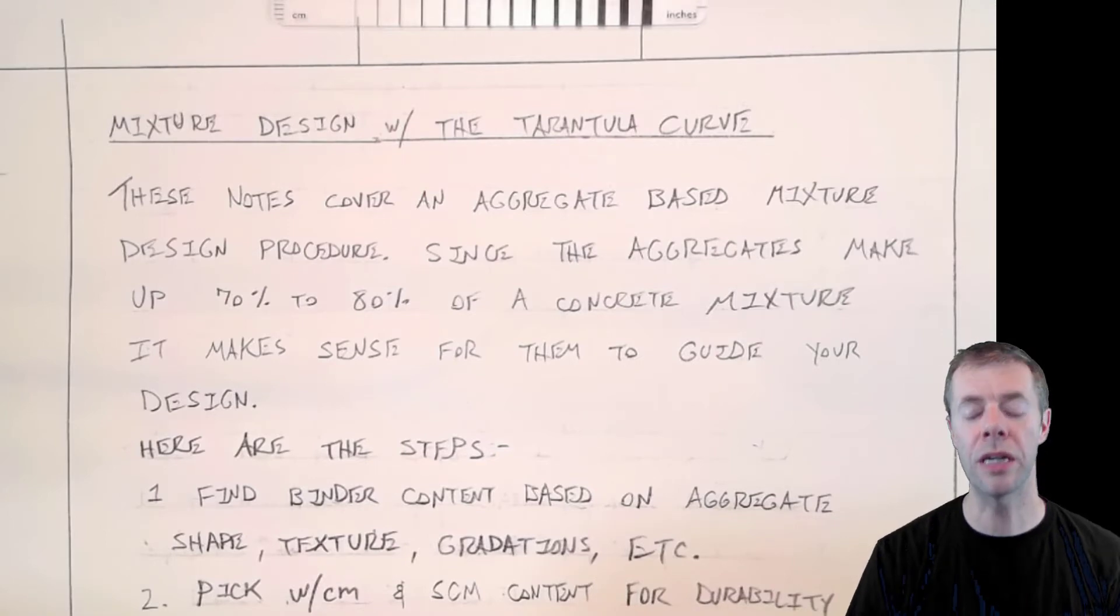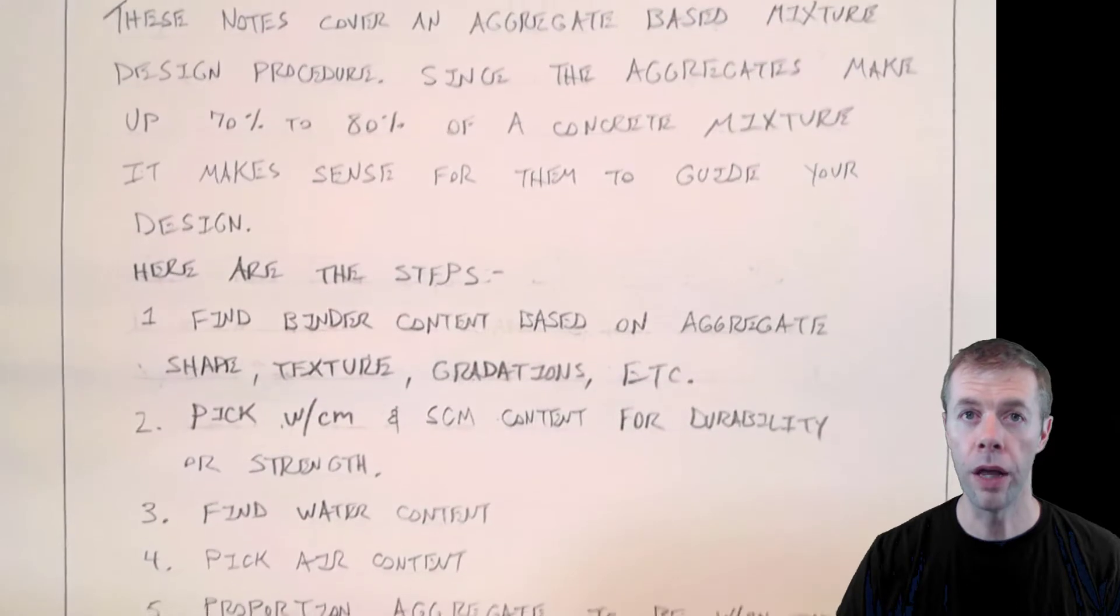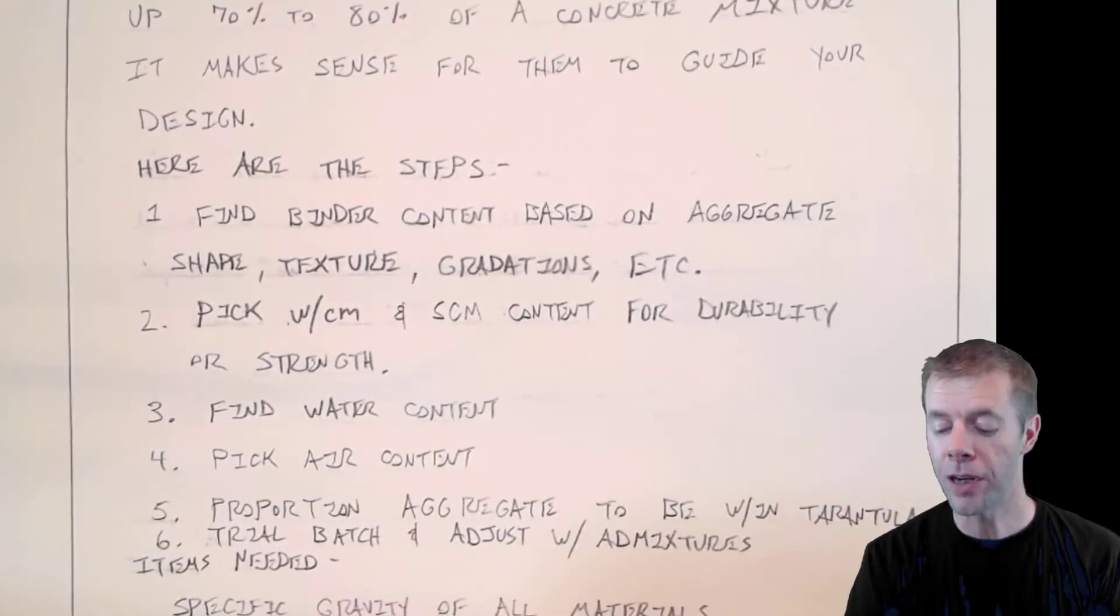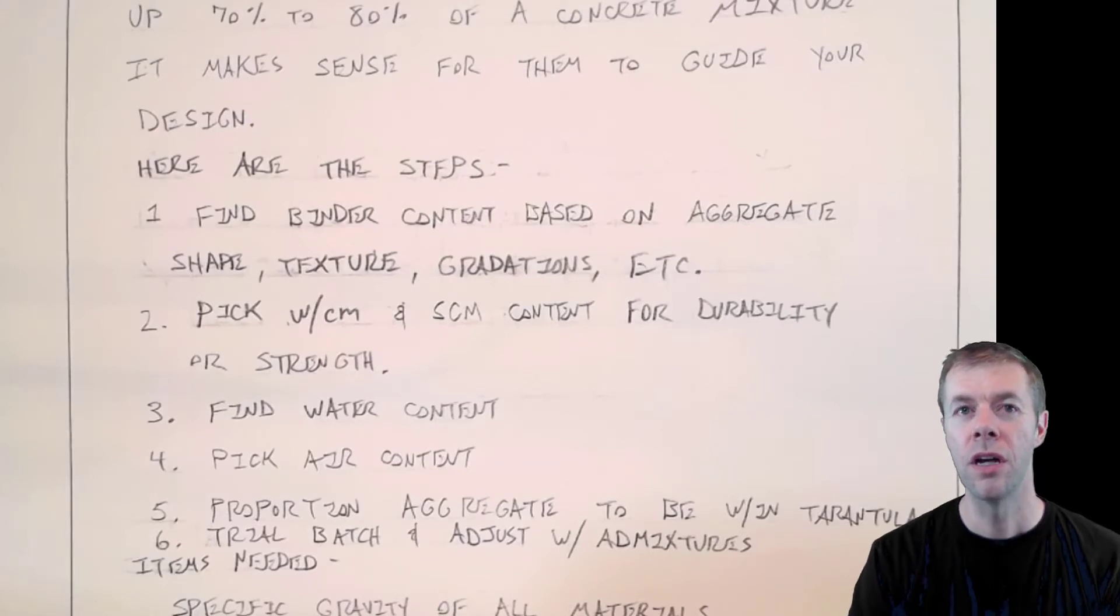These notes are meant to be a guide. Here are the steps. Number one, find the binder content based on your aggregate shape, texture, gradations, etc.